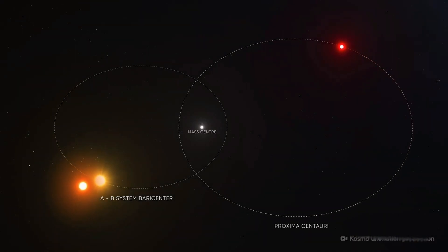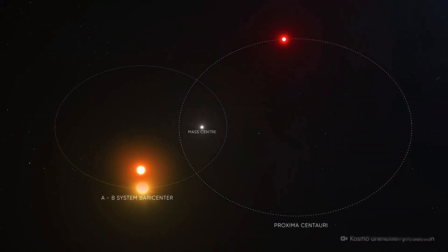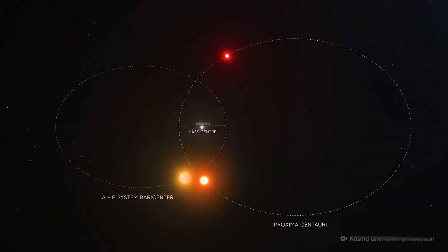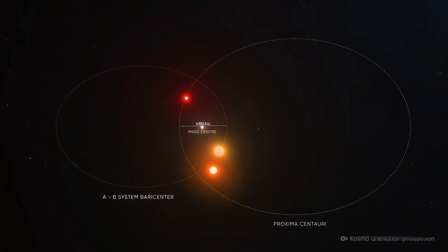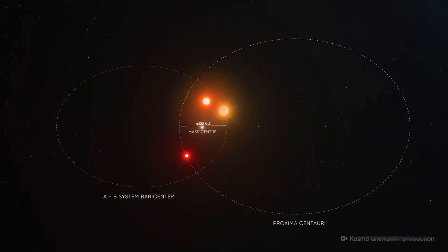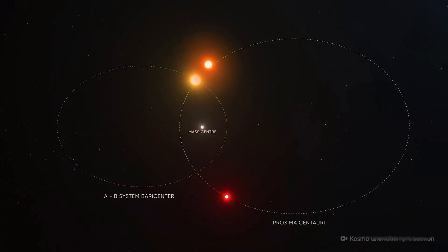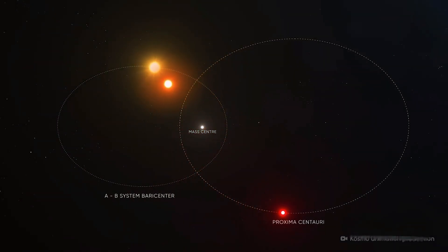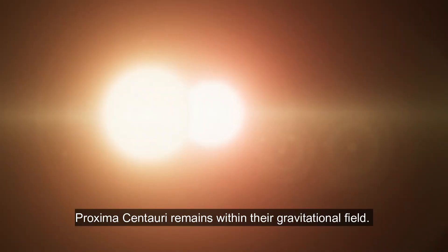Proxima Centauri is farther in the system than Alpha Centauri A and B because it is about 0.21 light-years from them. Despite moving further away from Alpha Centauri A and B, Proxima Centauri remains within their gravitational field.